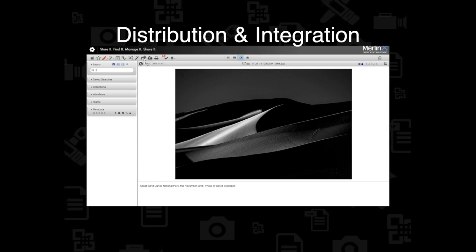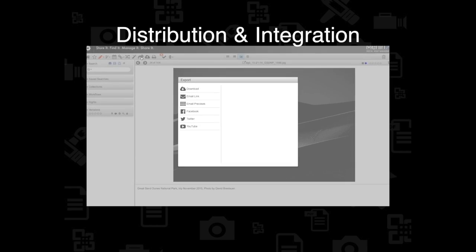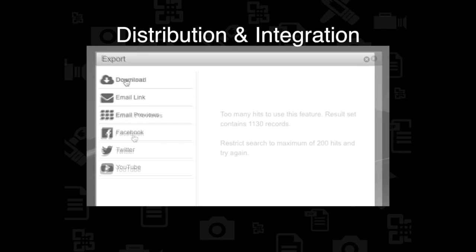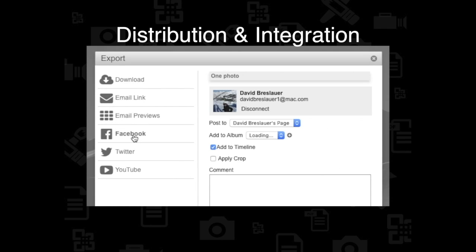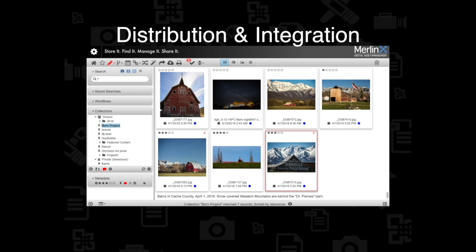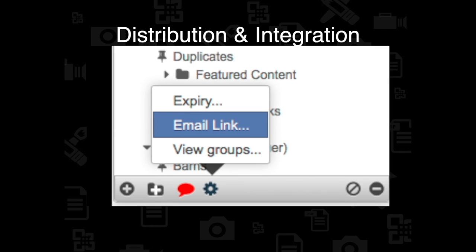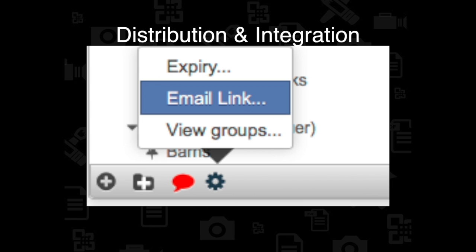In Merlin X, I also have the ability to deliver content from internal or external destinations with a mouse click, or set up automatic distribution with defined channels, shared collections, and searches.